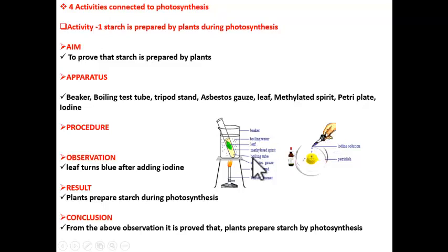Now what is the procedure? Take a stand, put a beaker over it, into that beaker add a boiling test tube with methylated spirit as shown in the figure. Then introduce a green leaf, then add water into the beaker, then put on Bunsen burner, let the water boil.